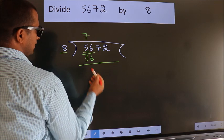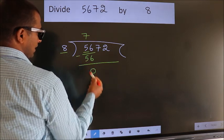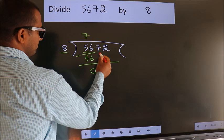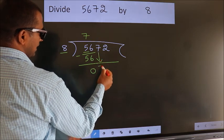Now we should subtract. We get 0. After this, bring down the beside number. So, 7 down.